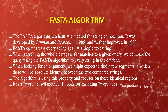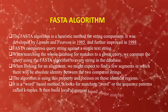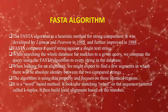When looking for an alignment, we might expect to find a few segments in which there will be absolute identity between the two compared strings. The algorithm uses this property and focuses on these identical regions. It is a word-based method. It looks for matching words, or sequence patterns called K-tuples, and then builds local alignment based on the matches.